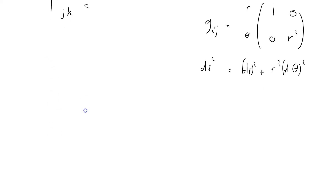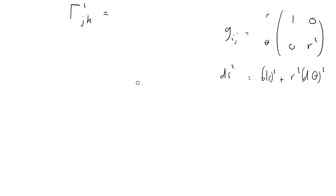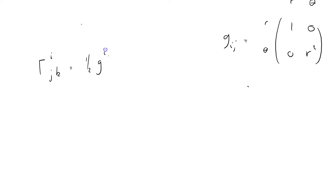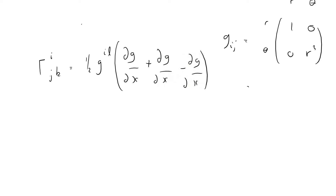I'll keep that up for reference. The Christoffel symbol Γ^i_jk equals one-half g^il summed over l, times the partial derivatives: ∂g_lk/∂x^j plus ∂g_lj/∂x^k minus ∂g_jk/∂x^l. Filling in the i, j, k, and l indices gives us the definition we'll work from.